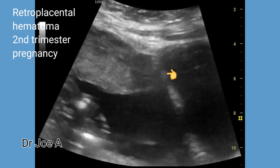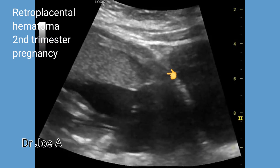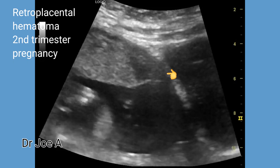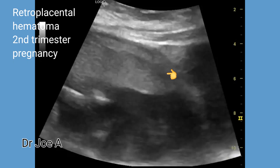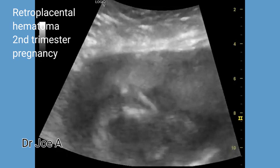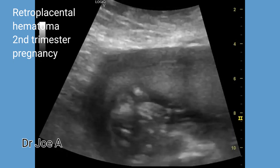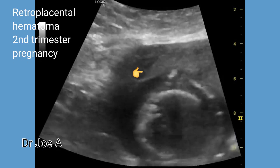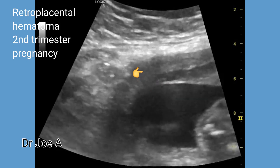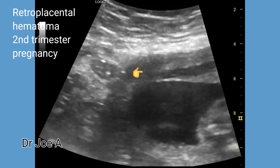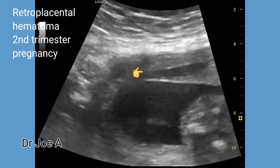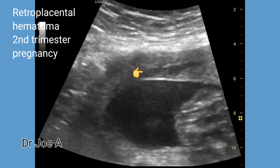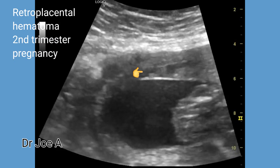There is a hypoechoic collection at the lower margin of the placenta. Thus, this patient has two retroplacental hematomas, one at the upper margin and one at the lower margin of the placenta.